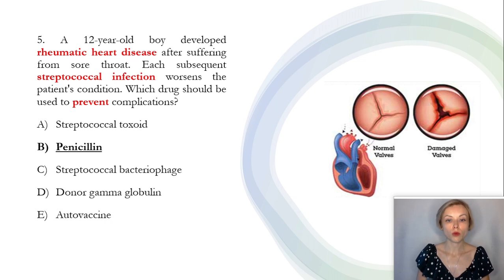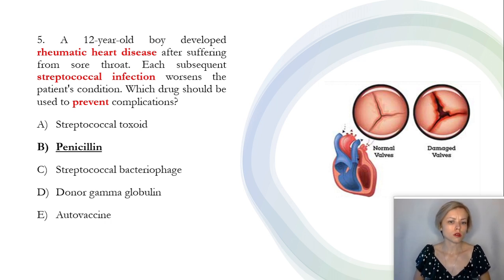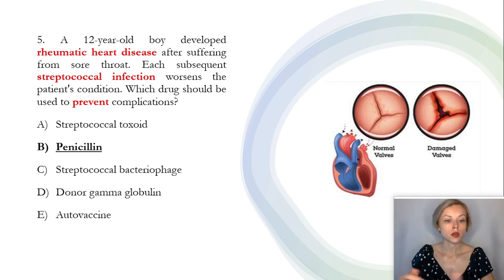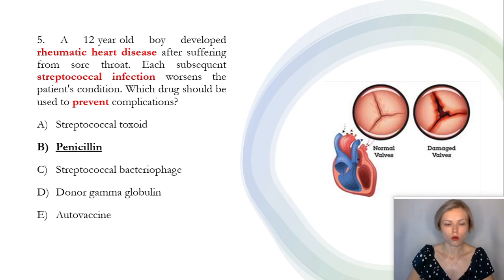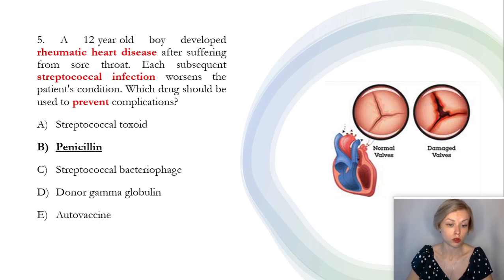Test number five, last test. A 12-year-old boy developed rheumatic heart disease after suffering from sore throat. Each subsequent streptococcal infection worsens the patient's condition. Which drug should be used to prevent complications? The correct answer is B, penicillin. According to medical protocols, the prevention of recurrence and progression of streptococcal infections requires regular administration of penicillin. Other preparations such as streptococcal toxoid, streptococcal bacteriophage, donor immunoglobulin, or autovaccine are specific and are not used for the prevention of rheumatism.